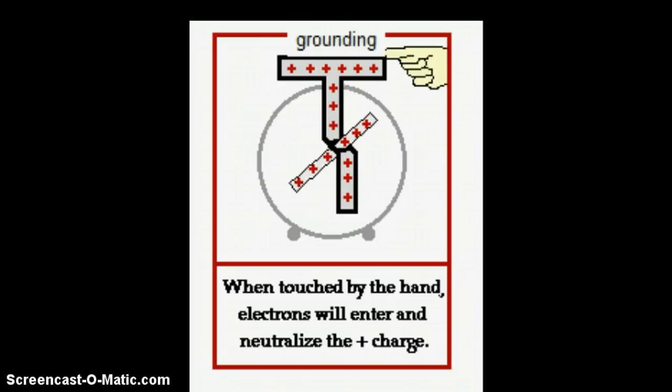In this case, it's positive charge on the electroscope, so we're going to need to bring in charge that will cancel that positive charge. We can't move the positive charge because that's protons, so it's not that we move the protons down the finger to the ground, it's that we're going to bring in electrons to neutralize that charge.